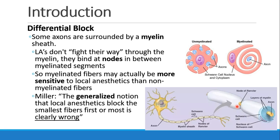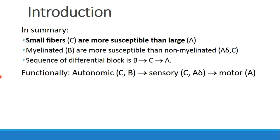In Miller's Anesthesia, he writes that the generalized notion that local anesthetics block the smallest fibers first or most is clearly wrong. To summarize: the small C fibers are more susceptible than the large A fibers. Myelinated B fibers are more susceptible to local anesthetic block than non-myelinated A-delta and C fibers. The sequence of differential block is first B, then C, and then finally A fibers. Functionally, autonomic fibers tend to be blocked first, then sensory fibers, and last the motor fibers. Recovery of block occurs in the opposite direction: first motor fibers recover, then sensory, and finally autonomic fibers.